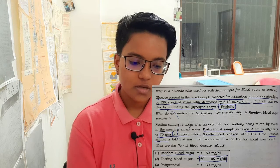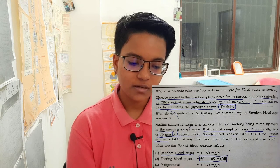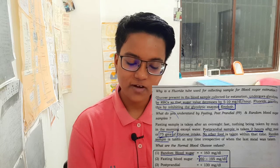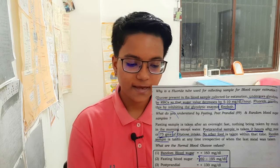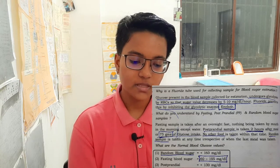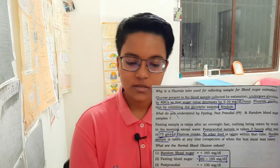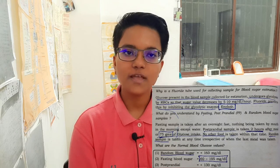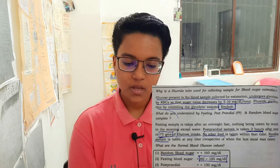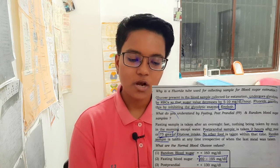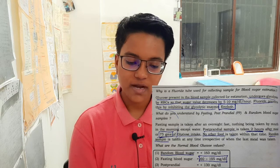What do you understand by fasting, postprandial, and random blood sugar samples? Fasting sample is taken after an overnight fast — nothing taken by mouth in the morning except water. Postprandial sample is taken two hours after a meal or 75 grams of glucose intake; no other food is taken within that time. Random sample is taken at any time irrespective of when the last meal was taken. Normal values: random blood glucose is less than 160 mg/dL, fasting is 60–105 mg/dL, and postprandial is less than 130 mg/dL.